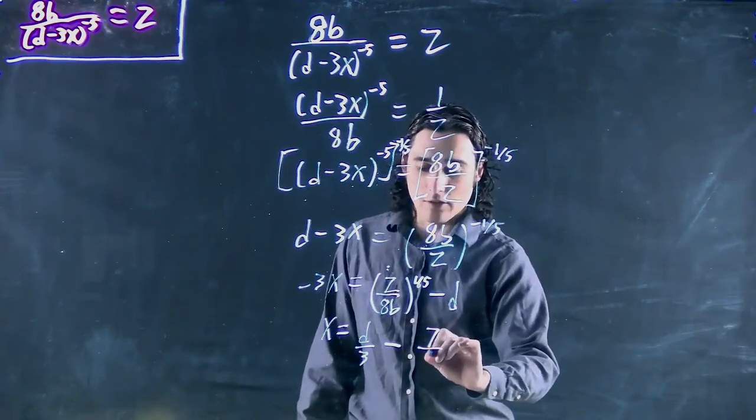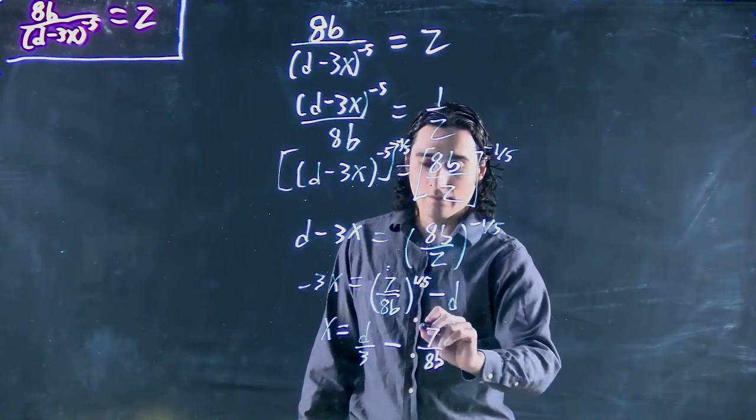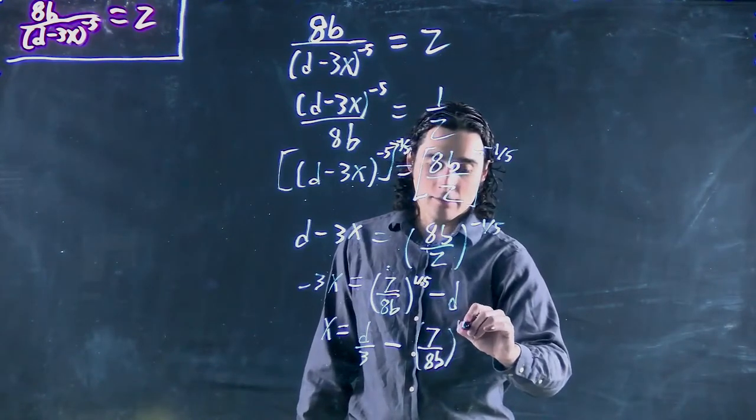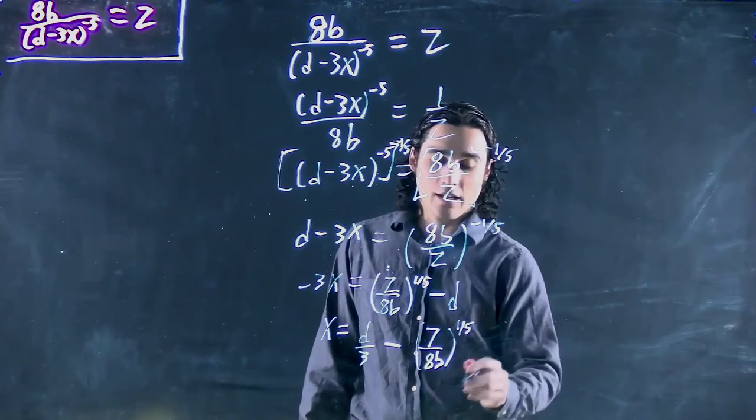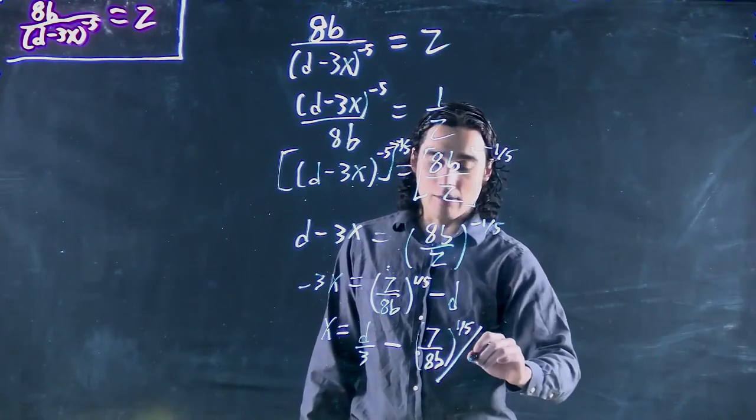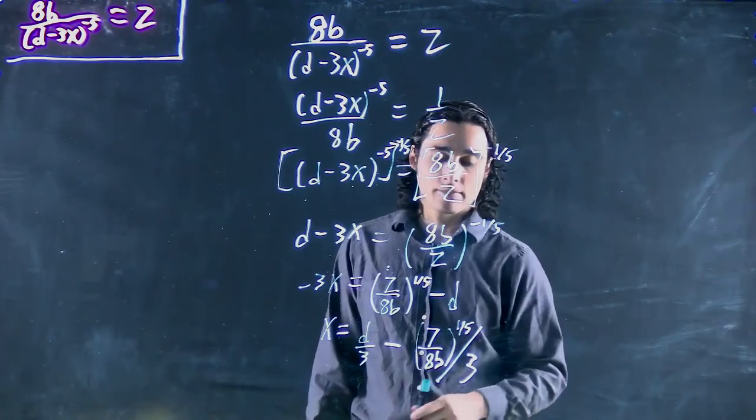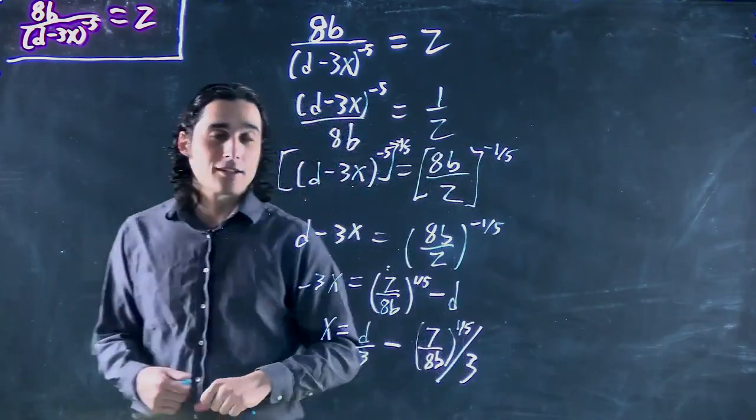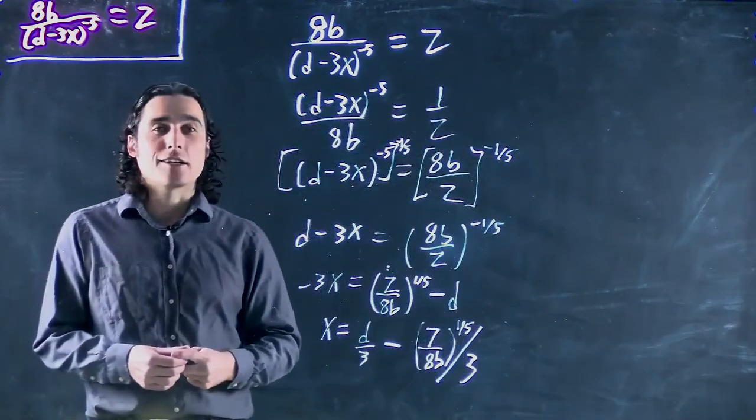We get z over 8b to the power of 1 over 5, and that in turn is divided by 3. So that would be the solution to this somewhat ugly-looking question.